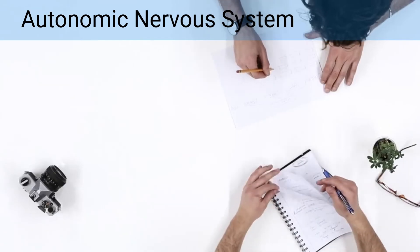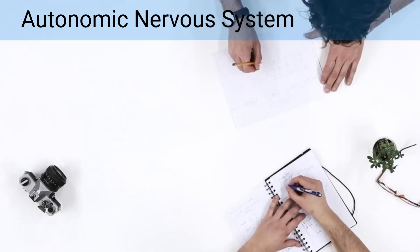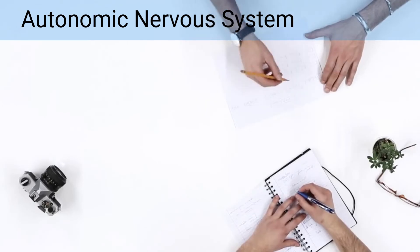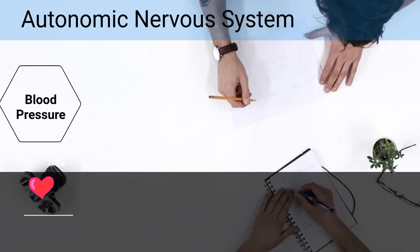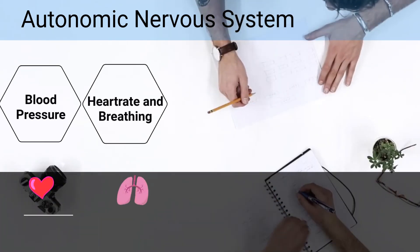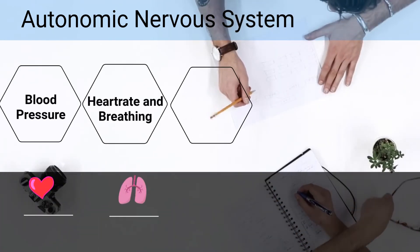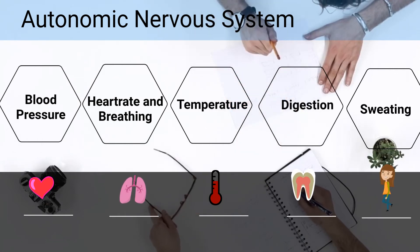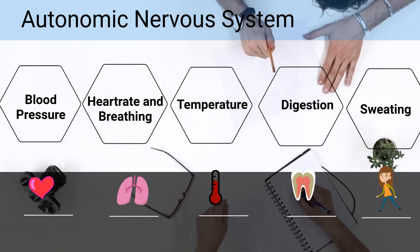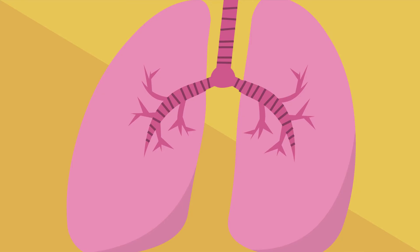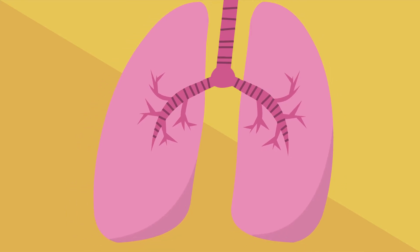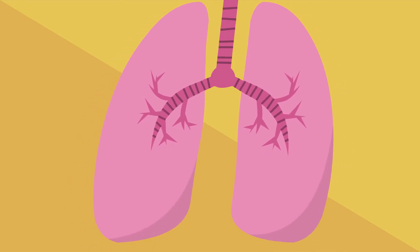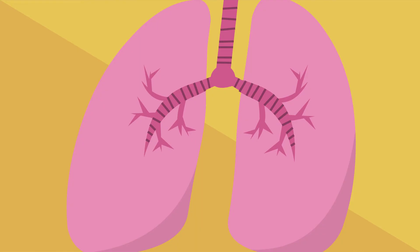The autonomic nervous system controls internal body processes such as blood pressure, heart and breathing, body temperature, digestion, and many more. For example, whenever you breathe, your autonomic nervous system controls the breathing so you don't have to think about it.